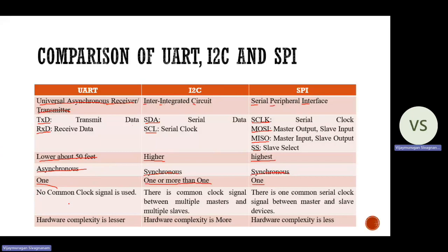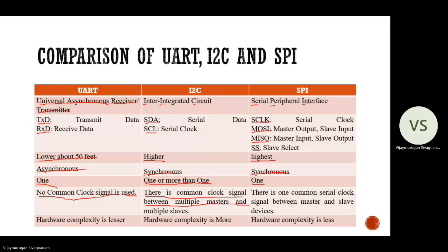Regarding clock signals: in UART, no common clock signal is used because it operates in asynchronous mode — different clock pulses are applied to master and slave. In I2C, there is a common clock signal shared between multiple masters and multiple slaves, operating in synchronous mode. In SPI, there is one common serial clock signal between the master and slave device, also synchronous mode.